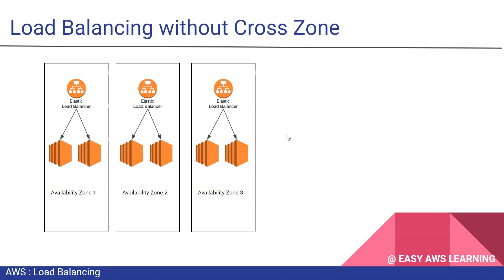If you don't have cross-zone load balancing enabled, it will distribute your traffic within the same availability zone only. It will not distribute traffic across availability zones. So your registered instances will only serve traffic within the same availability zone.